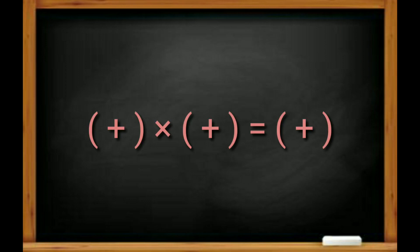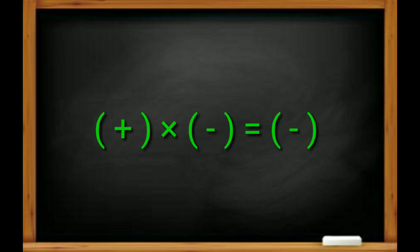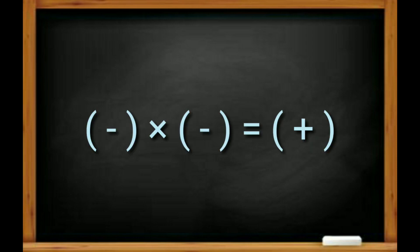The product of two positive integers is a positive integer. The product of one positive and one negative integer is a negative integer. And the product of two negative integers is a positive integer.